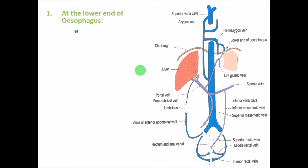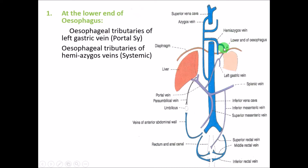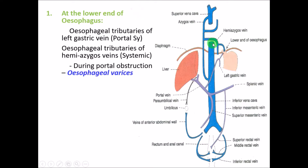At the lower end of the esophagus, the esophageal tributaries of the left gastric vein — part of the portal system — anastomose with the esophageal tributaries of the hemi-azygos vein, which is part of the systemic veins. If portal pressure increases, this leads to a condition called esophageal varices.